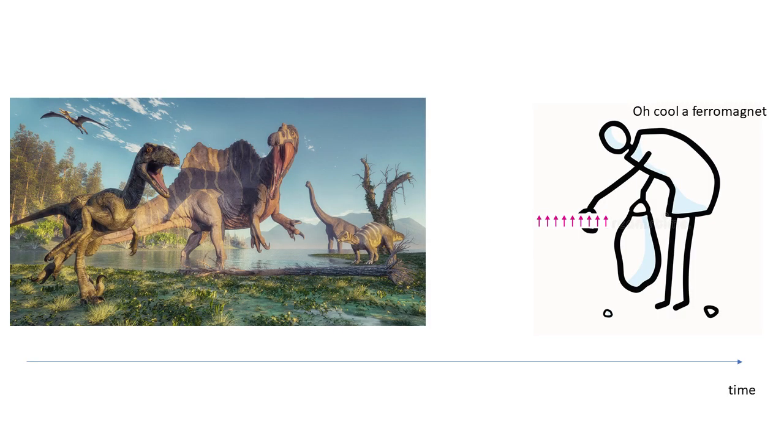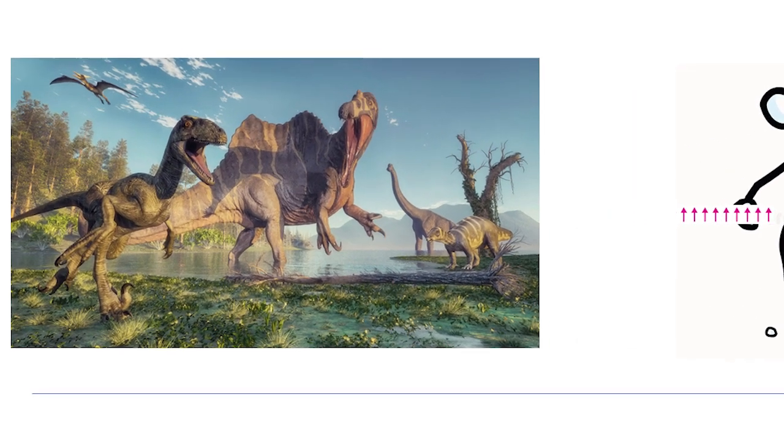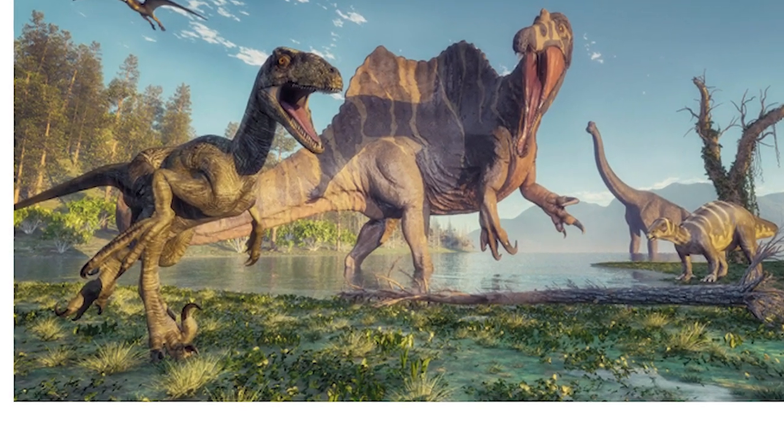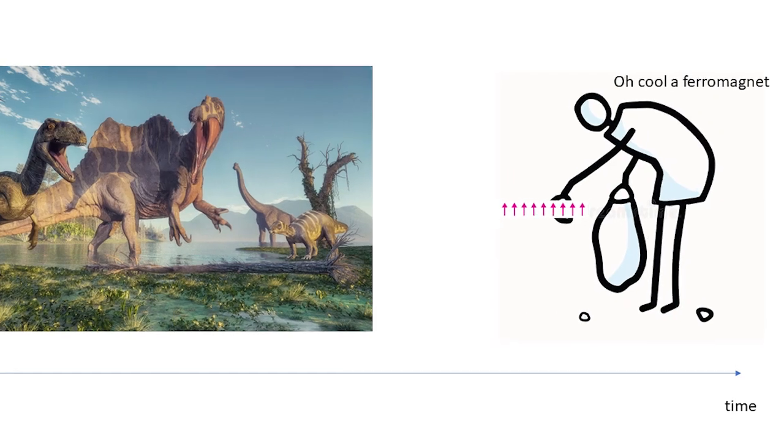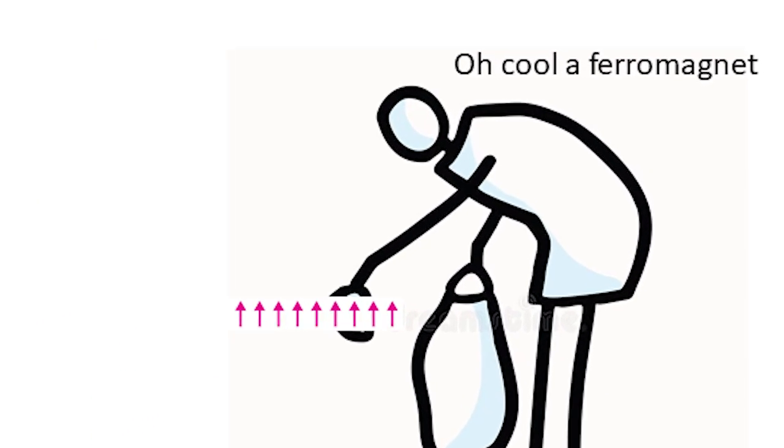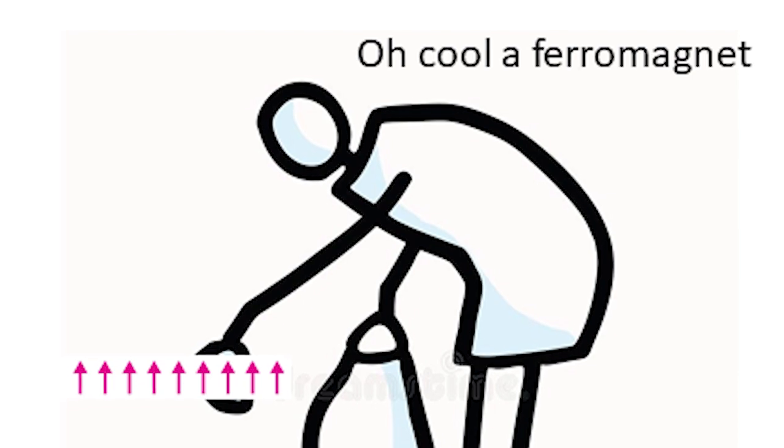Now you might ask, but how did it get into a particular configuration to start with? The way that people understand that is by saying that it just depends upon the past history of what's happened to the ferromagnet. This ferromagnetic thing was in a rock from the beginning of time, then dinosaurs were there, then eventually you came along and found it in this up configuration. It just depends upon what happened to it in the past.